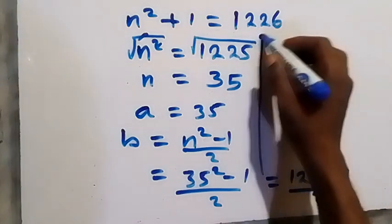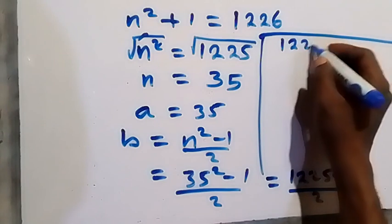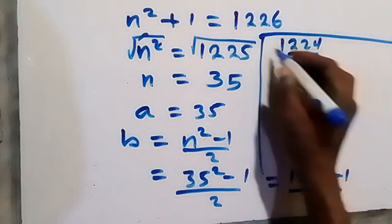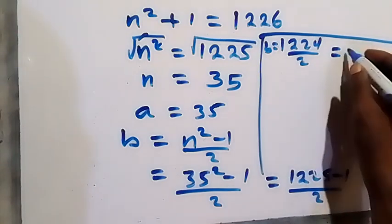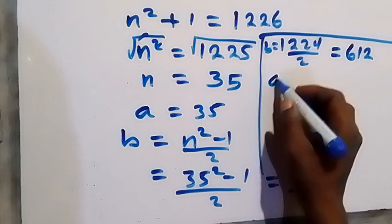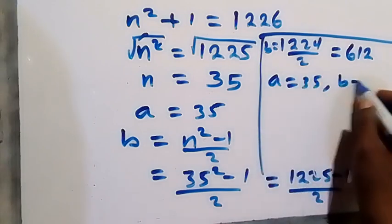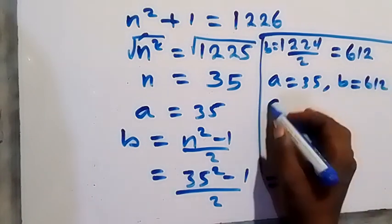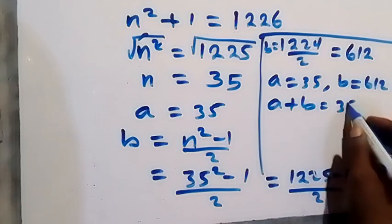Let's write it here. We have 1224 over 2, that's b, which gives us 612. Then we have a to be 35 and b to be 612.